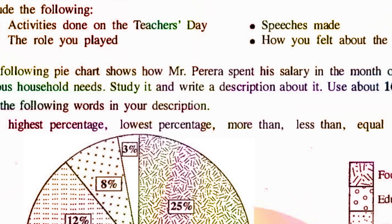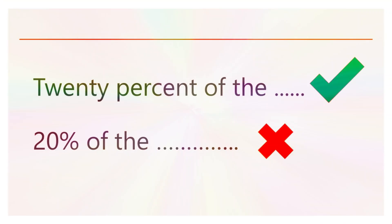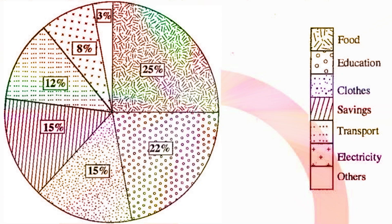We will show you an example. Let's say the percentage, number by number. For example, 20% of the salary. Mr. Pereira chose to spend on food. If you want to add the food value, you can add 25% of the food value.